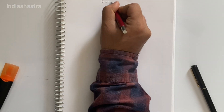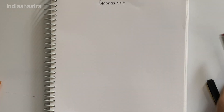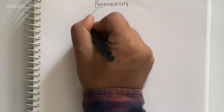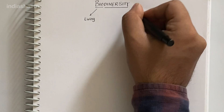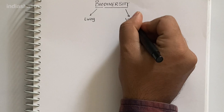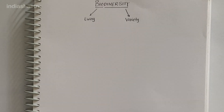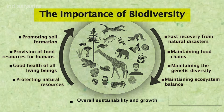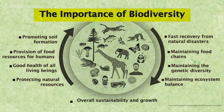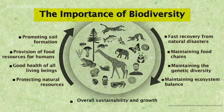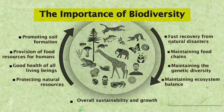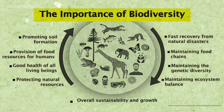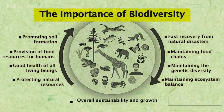Let us begin this session with a simple definition of biodiversity. As suggested by the name, bio means living and diversity means variety. Thus, the variety of living organisms present at a place is known as biodiversity. Different plants, animals, marine life, microorganisms, insects, habitats, ecosystem, etc. — that makes our planet so unique and so fascinating.